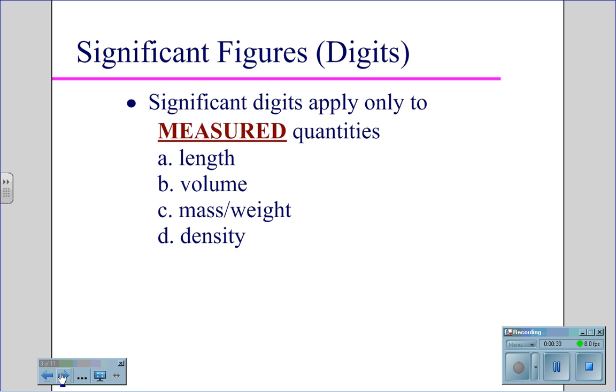Significant digits apply only to measured quantities like length, volume, mass, weight, and density. Remember that temperature is never a significant digit.